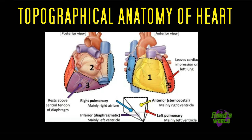The surface labeled one is your anterior or sternocostal surface and it is composed of your left ventricle. The surface labeled two is your posterior surface, also called the base, and it is composed of your left atrium. The surface labeled three is your inferior or diaphragmatic surface, composed of your left ventricle.